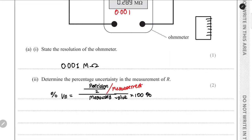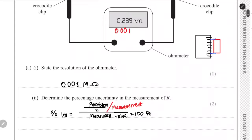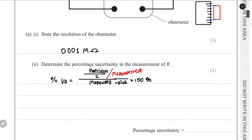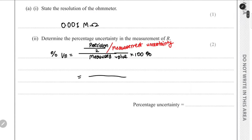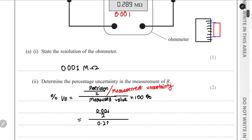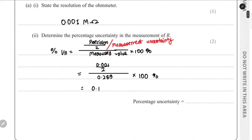It's called a double reading instrument because when we use a meter rule to measure the length of something, we have to measure both ends — two values. In this case it's an ohmmeter, so it's a single reading instrument. The precision is 0.001 divided by 2, and the measured value is 0.289. Multiplying by 100, we get 0.17%.